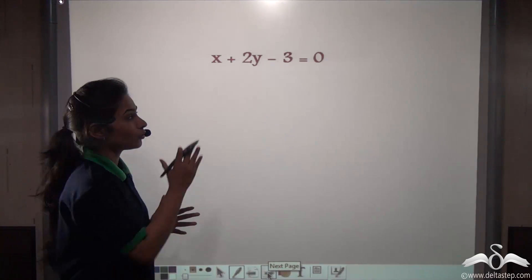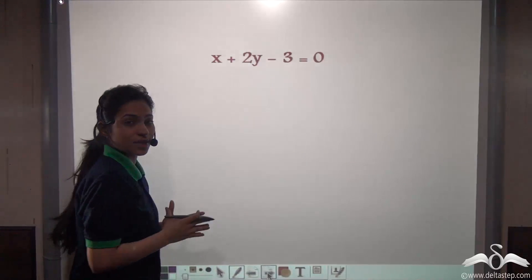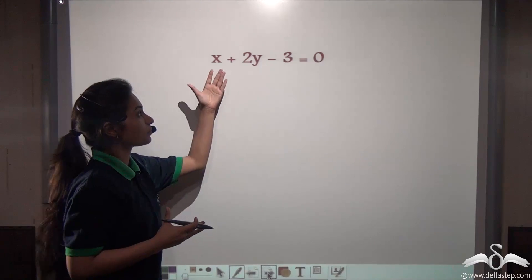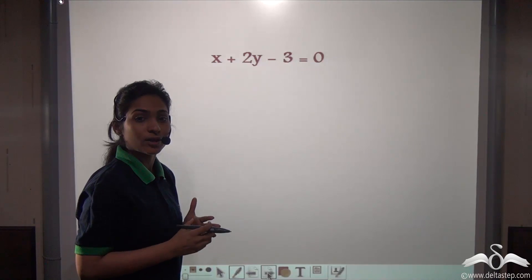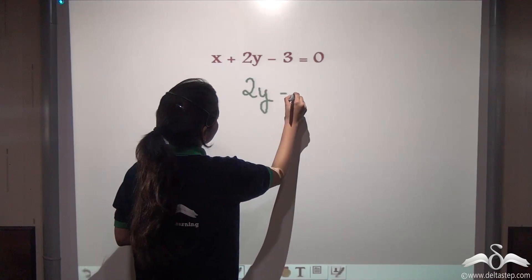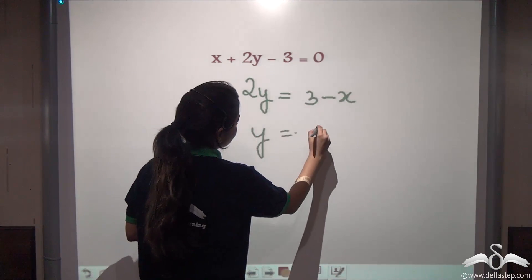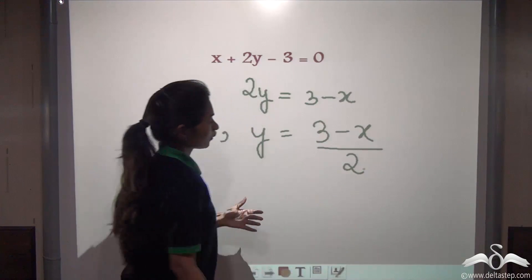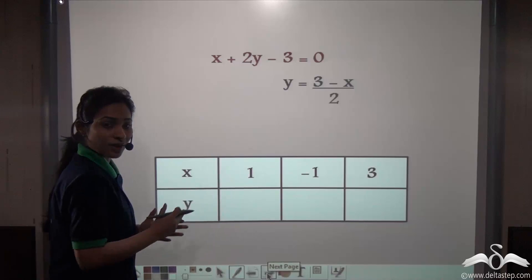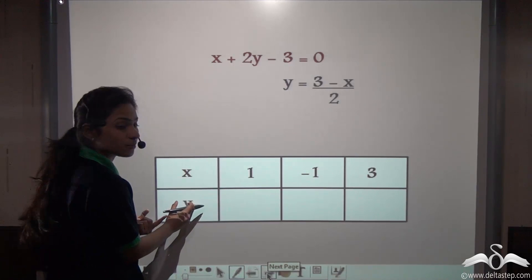Let's take the first equation. You know how to graph an equation on the graph paper. First of all we will make y the subject of this equation so that when we put values for x, we get the subsequent values for y. We are doing this because we need x and y values so that we can plot those coordinates on the graph paper. So let's make y the subject of this equation.